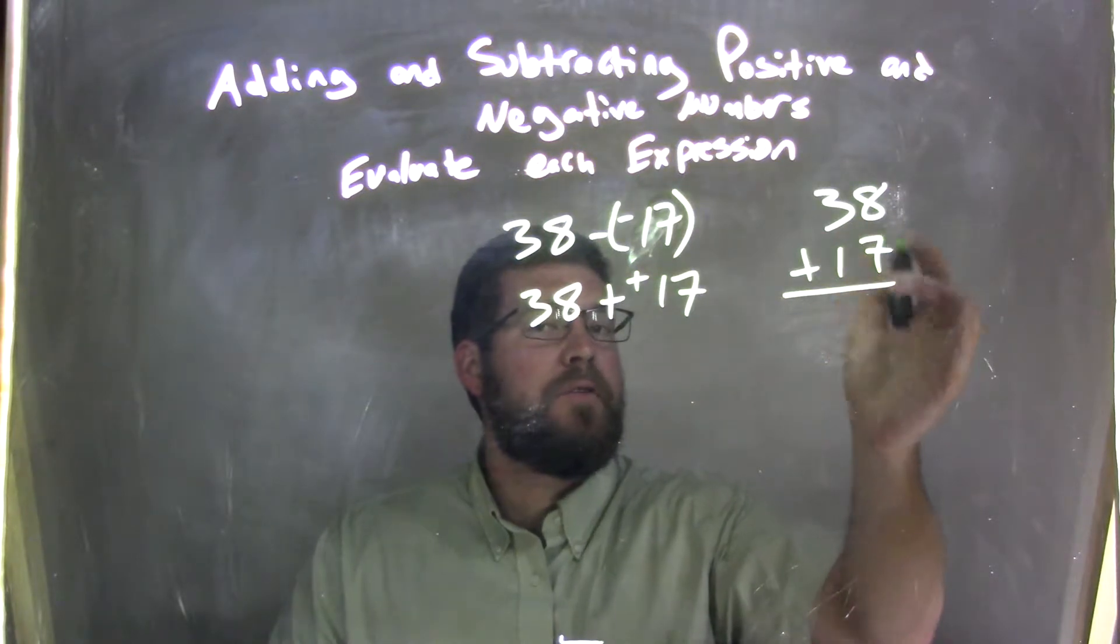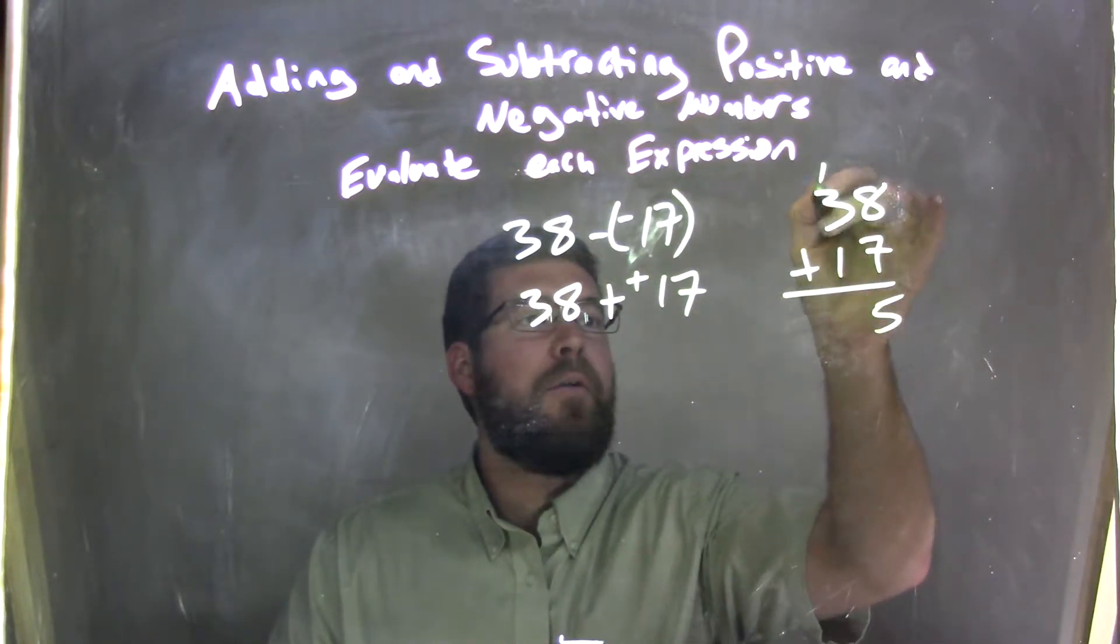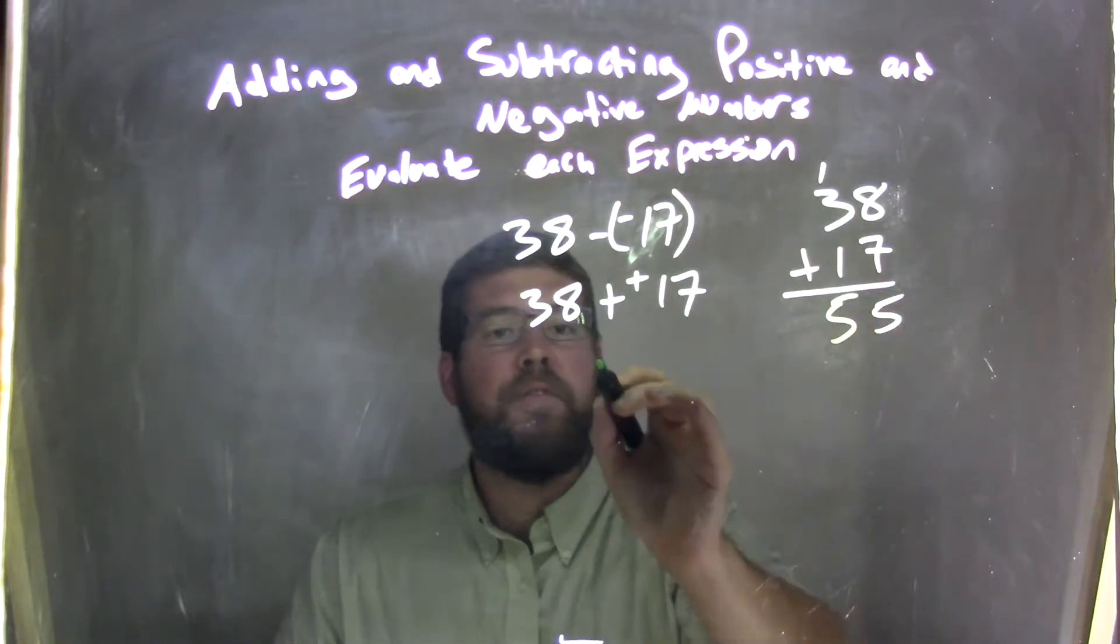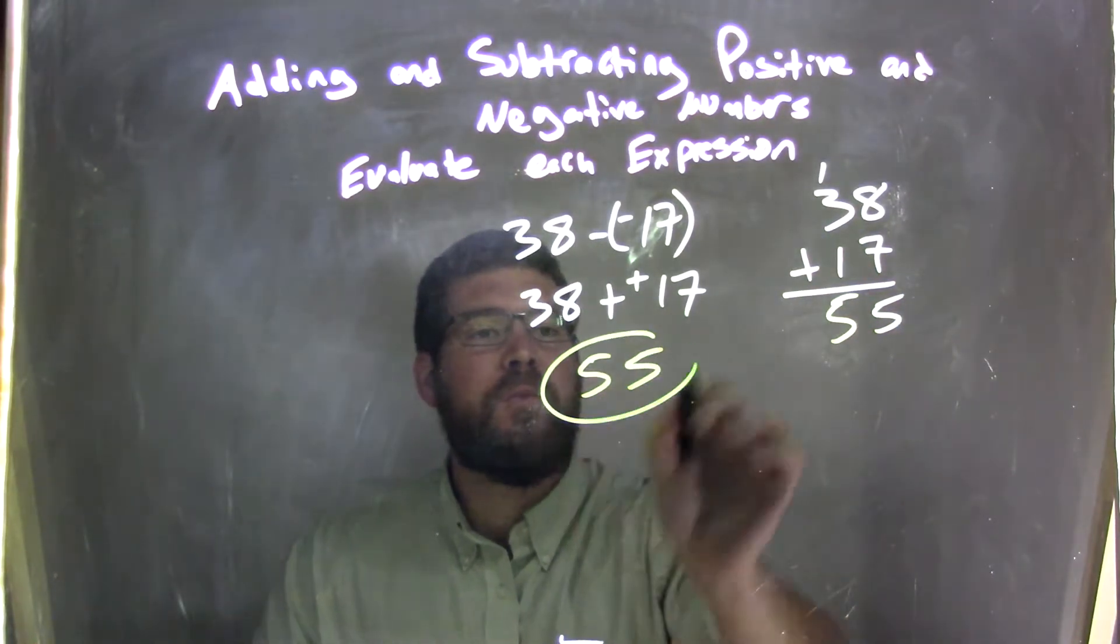8 plus 7 is 15. Carry the 1. 1 plus 3 plus 1. 1 plus 3 is 4, plus 1 is 5, and 55. And so 55 was my final answer.